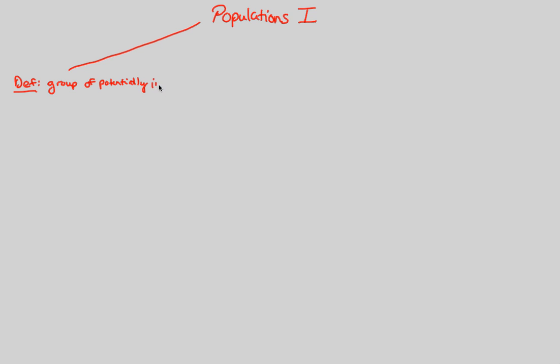A population can be defined as a group of potentially, we really want to notice the language used here, potentially interbreeding organisms of same species living in the same area at same time.